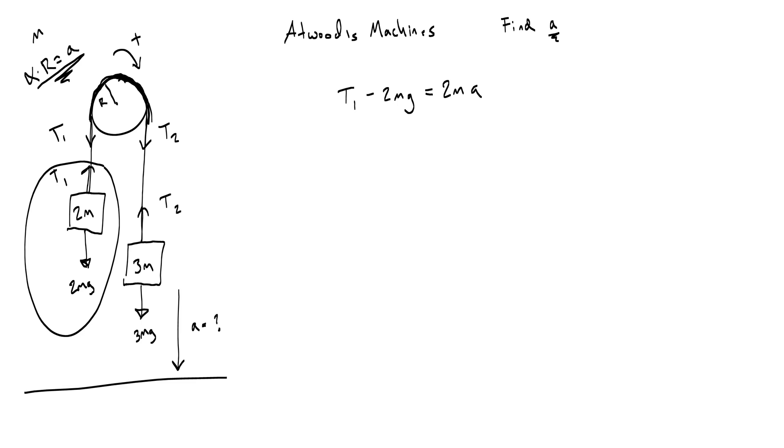Okay, now for the second block, or the 3m block, down is now positive, so I would say 3mg minus t2 is equal to the mass times acceleration, or 3m, times a.